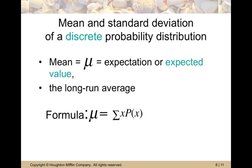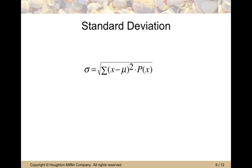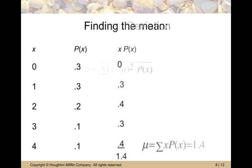We can find the mean and standard deviation of a discrete probability distribution. Another way of referring to the mean is the expectation or expected value. It's the long-run average. So mu is going to equal the sum of each X times the probability of that X occurring. You will get a formula sheet for the quizzes and tests in this chapter, so you need to be able to use the formula, but you don't have to have it memorized.